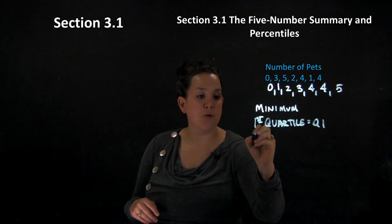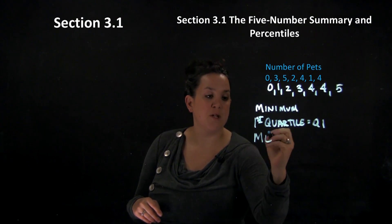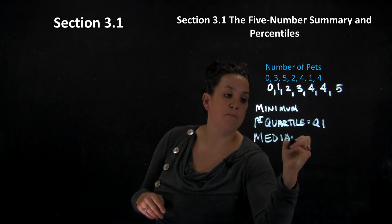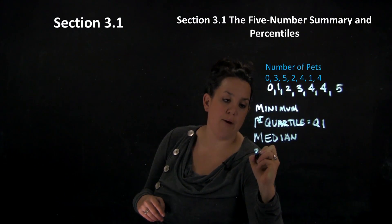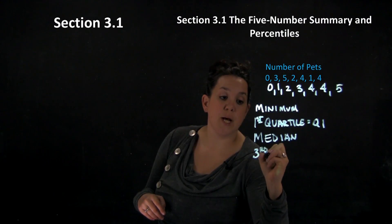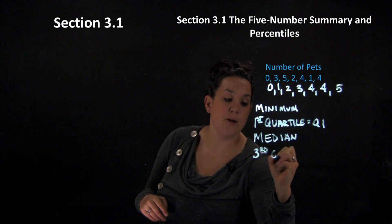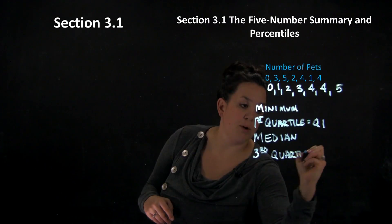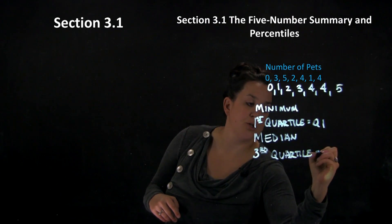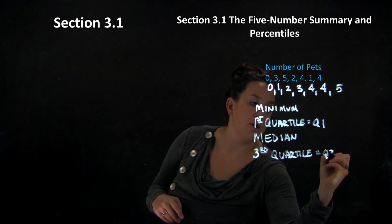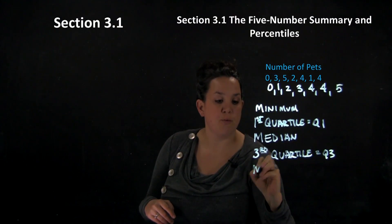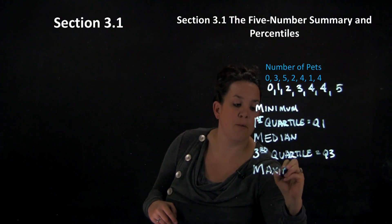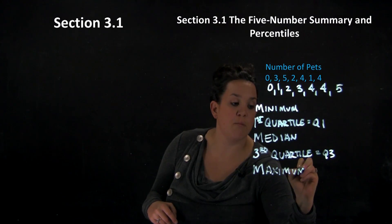The next measurement included in the five number summary is going to be referred to as the median. Then we would have the third quartile, which can be shortened to Q3. And then we would end with the maximum. So those are the five numbers represented in the five number summary.